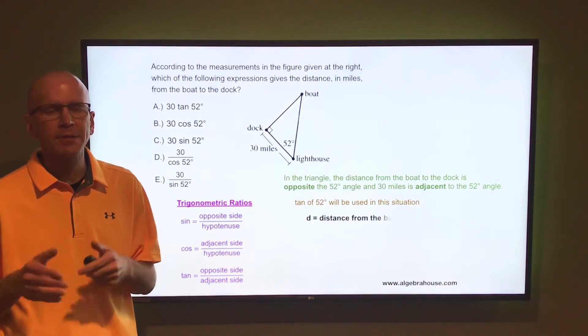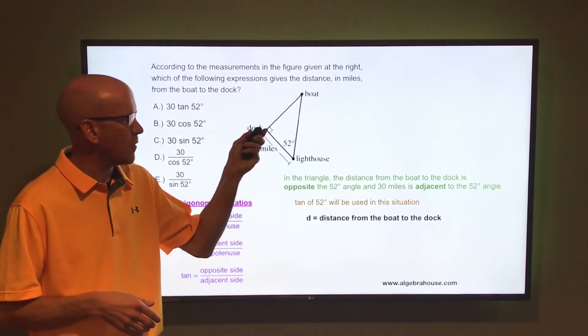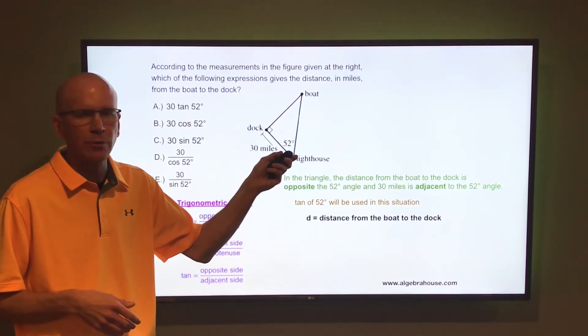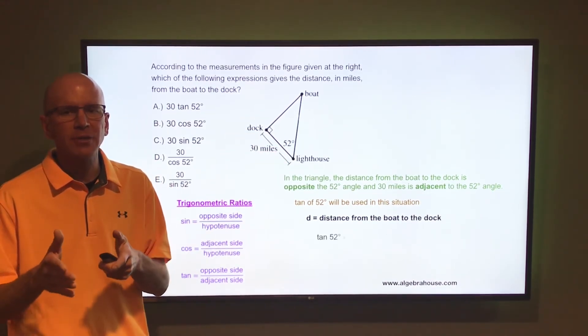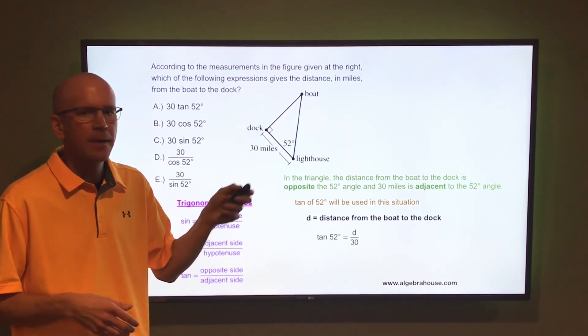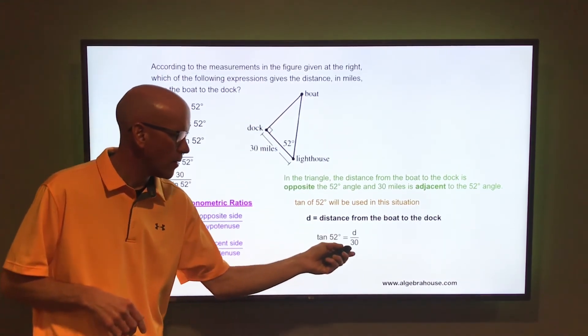Now we don't know the distance from the boat to the dock. We just call that D. So D equals the distance from the boat to the dock. Remember that's opposite that 52 degrees. So you can say the tangent of 52 degrees is equal to opposite over adjacent, or in this case D over 30.